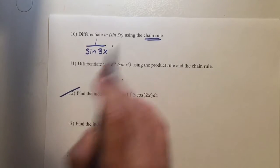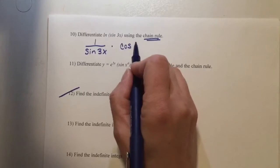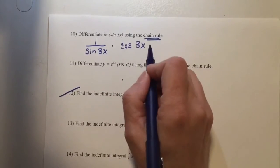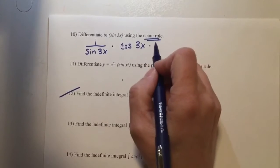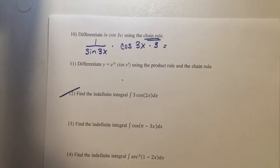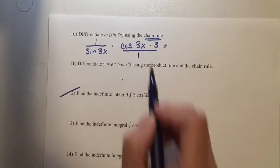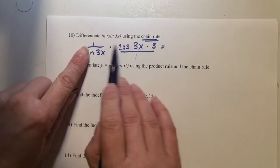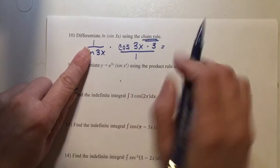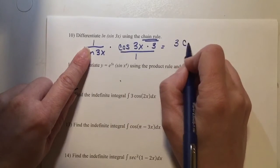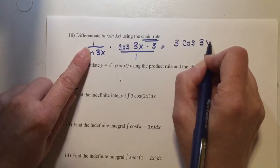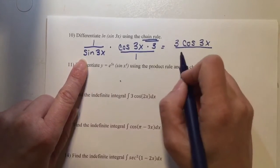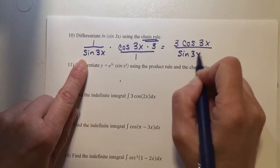The derivative of a sine is a cosine — leave the 3x the same. But because this is more than just an x, I have to multiply by the derivative of 3x, which is 3. Because it's not on the bottom of a fraction, we can assume it's on the top. So when I write my final answer, I have a 1, a cosine of 3x, and a 3 on the top — so it's 3 times the cosine of 3x on top. The bottom is the sine of 3x.